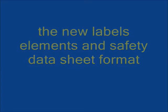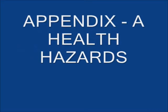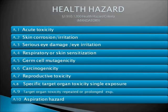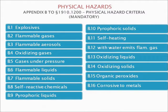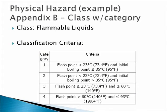For more details on Hazard Classification, manufacturers and importers can see Appendix A and Appendix B of the Revised Hazard Communication Standard. Appendix A of the new standard lists health hazards with their associated categories. Appendix B lists physical hazards with their associated categories. There are specific criteria for classifying health and physical hazards. Hazard Class indicates the nature of the hazard — for example, flammability. Hazard category is the degree of severity within each hazard class. For example, for the physical hazard flammability, there are four levels of flammability.